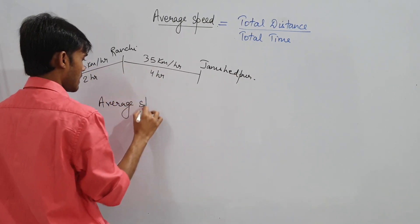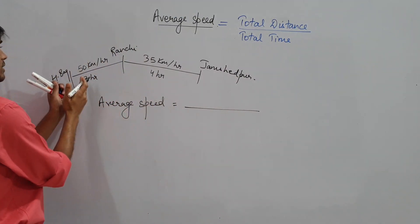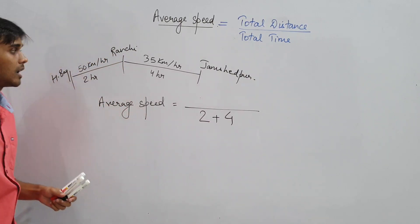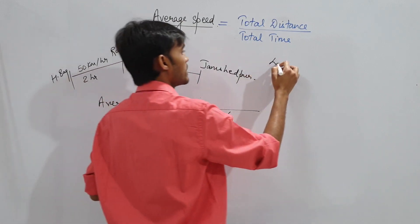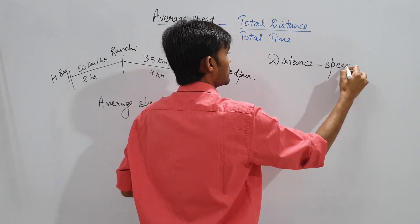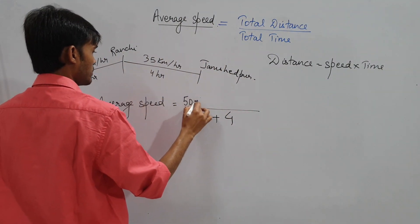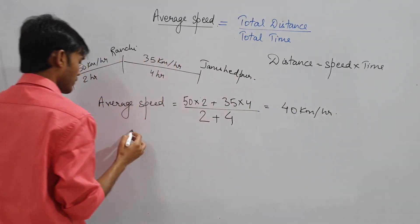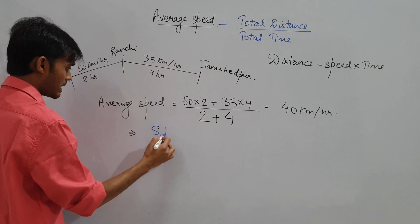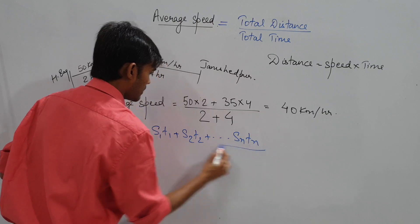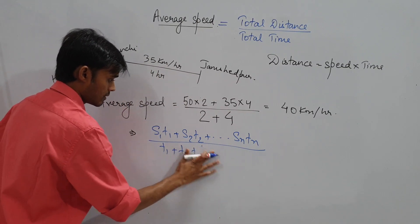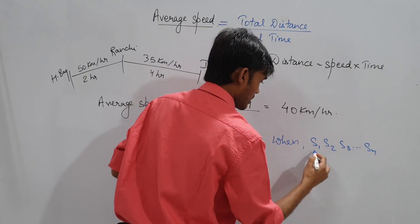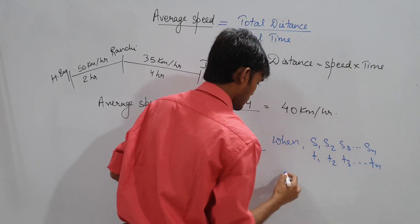The only formula for distance is speed into time. So distance for first segment: 50 into 2; for second: 35 into 4. Answer: 40 km per hour. The formula derived is: S1·T1 plus S2·T2 up to Sn·Tn, divided by T1 plus T2 up to Tn — when S1, S2, S3 and T1, T2, T3 are known.